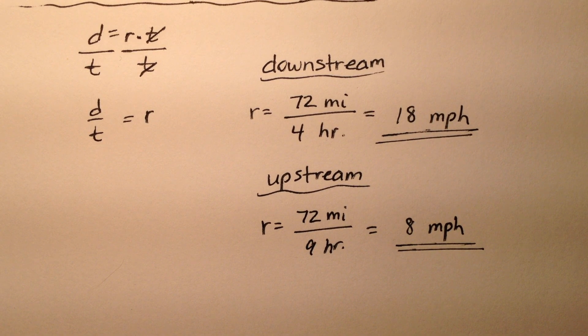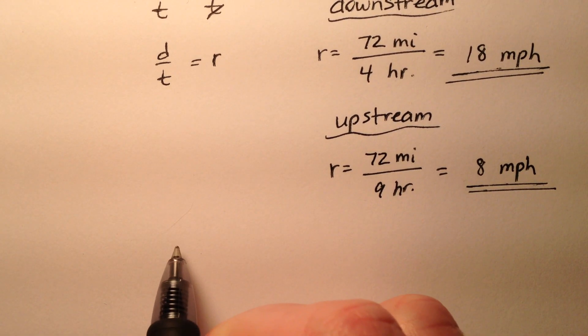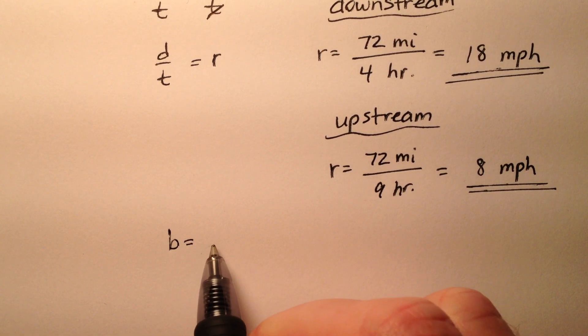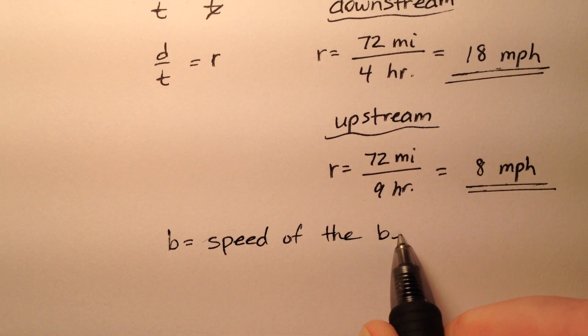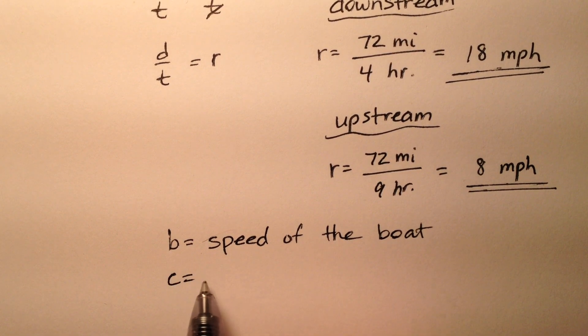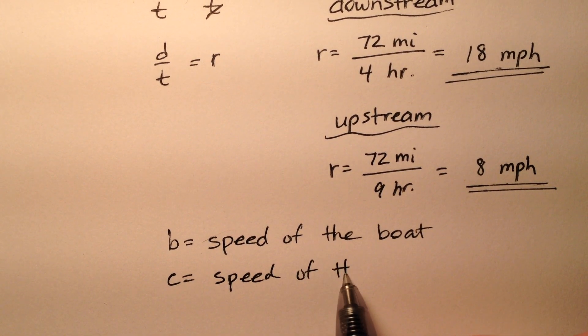So again, we're looking for the speed of the boat and the speed of the current. So let's go ahead and write variables here. B is the speed of the boat, and C equals the speed of the current.